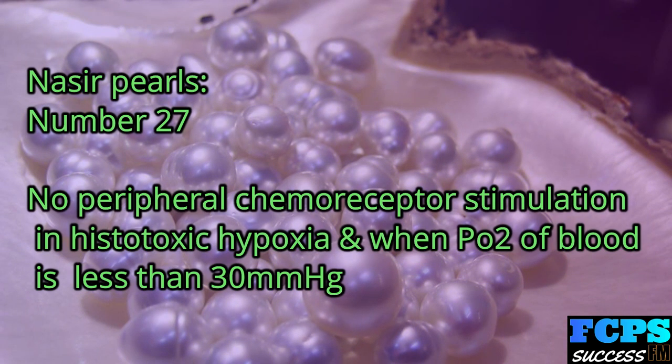Nasir Pearl number 27: There is no peripheral chemoreceptor stimulation in histotoxic hypoxia and when the PO2 of blood is less than 30 mmHg.